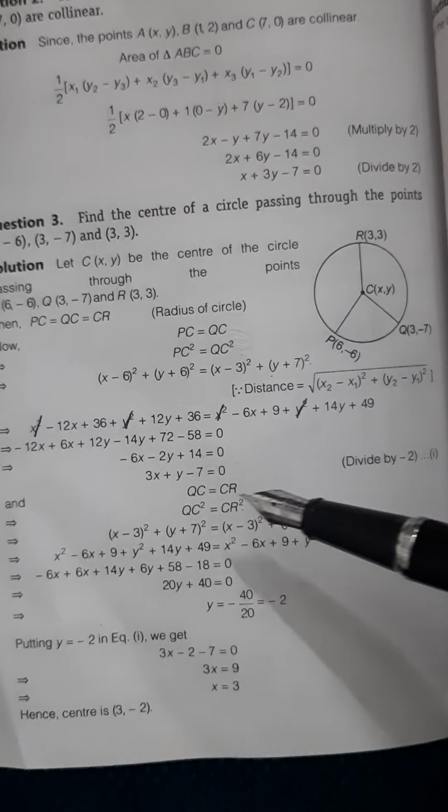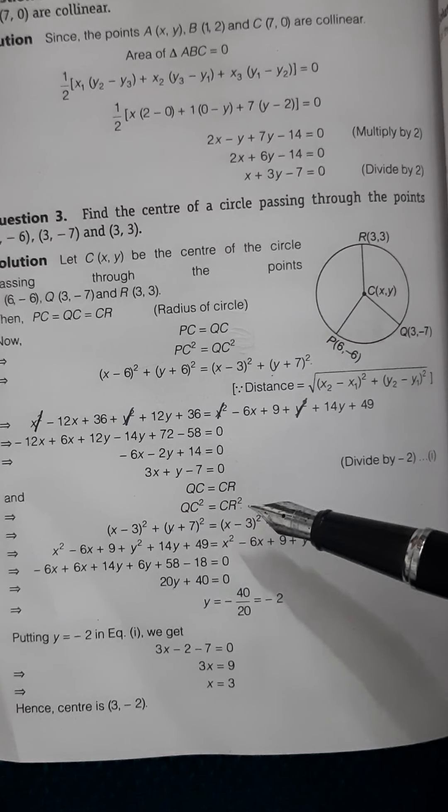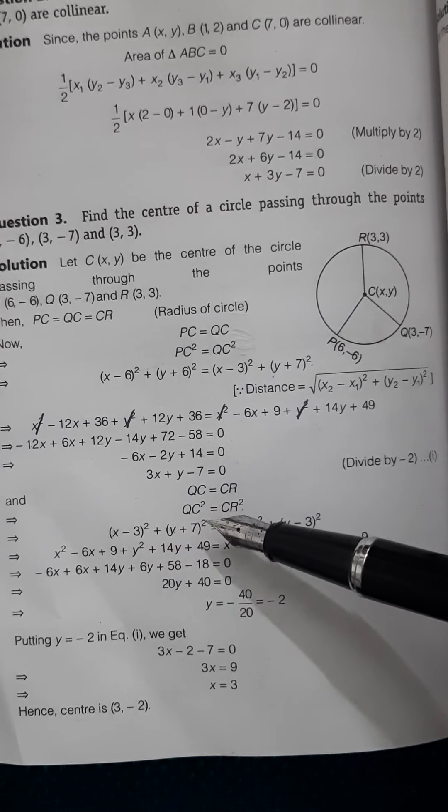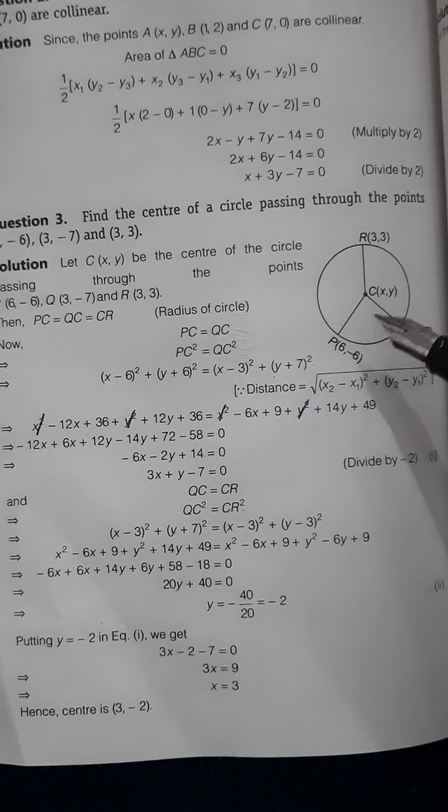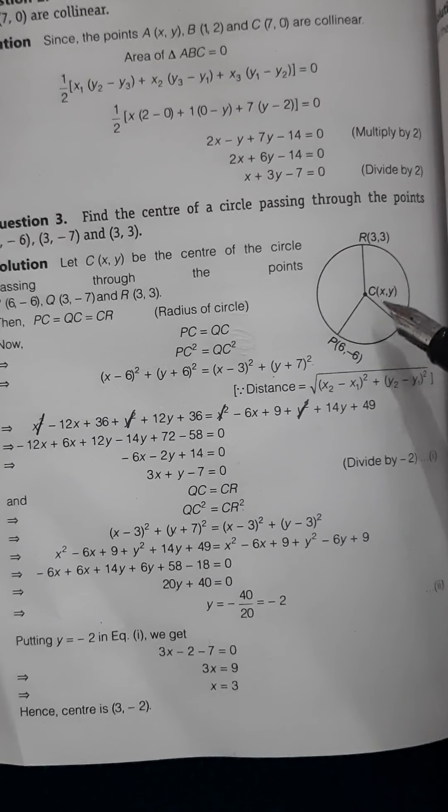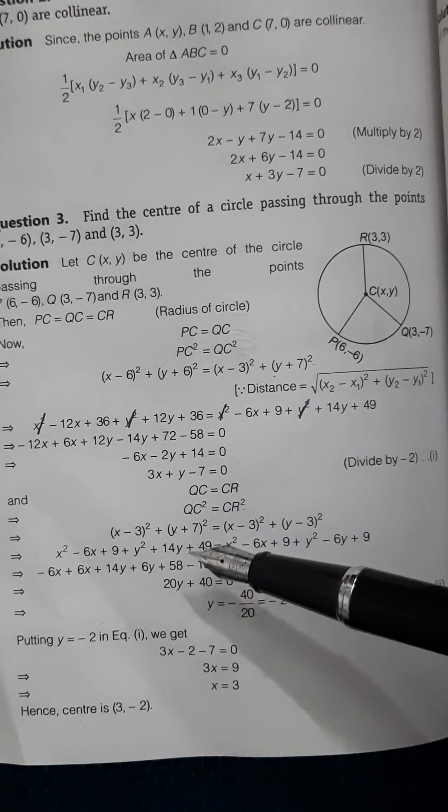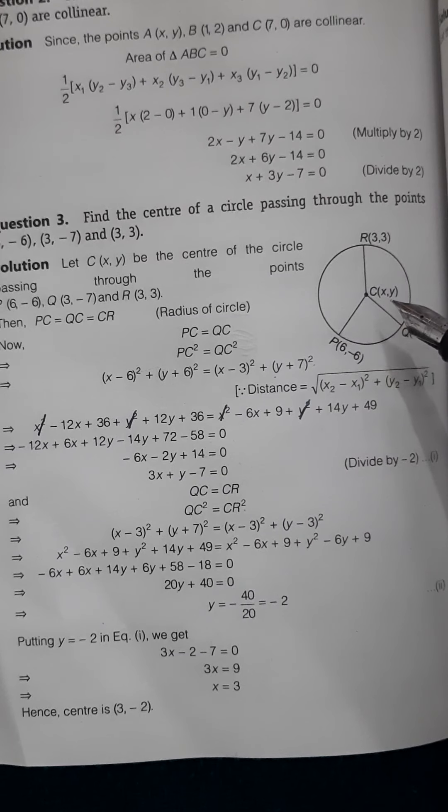CQ and CR are equal. I can square both sides. When squaring, the advantage is we don't have to take the roots. The distance formula to find CQ is (x₂ - x₁)² + (y₂ - y₁)². This will be (x - 3)² + (y + 7)² equal to the distance formula again: (x - 3)² + (y - 3)².